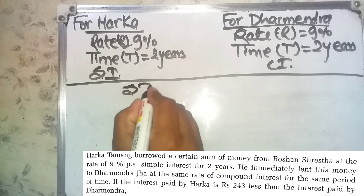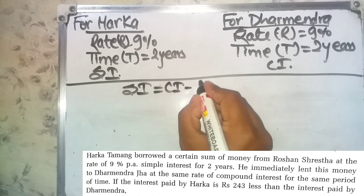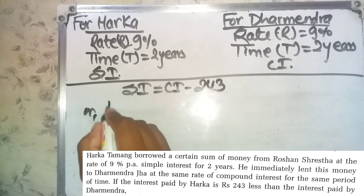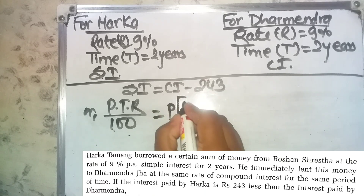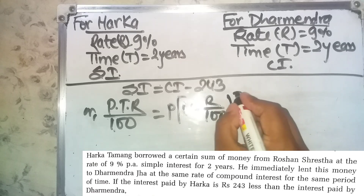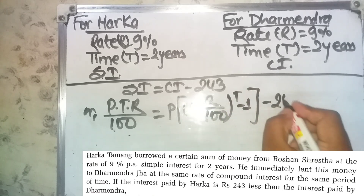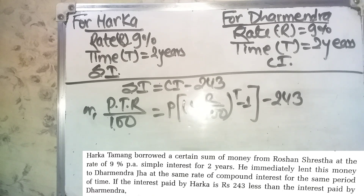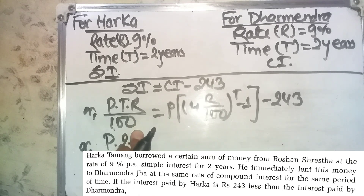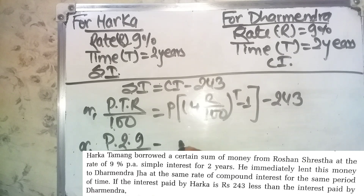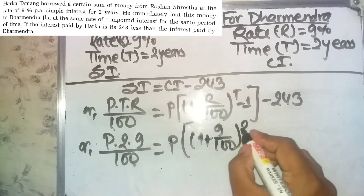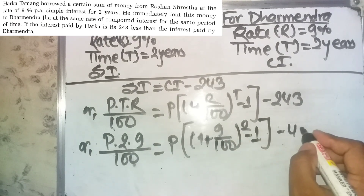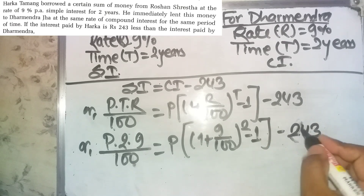Setting up the equation: SI equals P×t×r/100, and CI equals P×(1 + r/100)^t − 1. Substituting: time = 2 years, rate = 9/100, power t = 2, minus 1, minus 243.